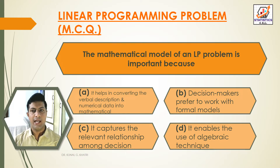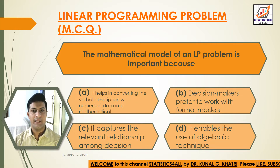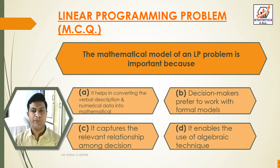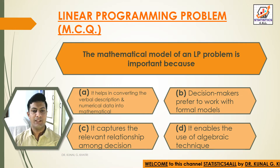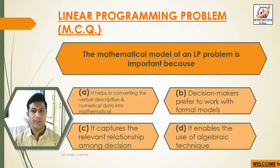Question 3: The mathematical model of an LP problem is important because — Option A: It helps in converting the verbal description and numerical data into mathematical form. Option B: Decision makers prefer to work with formal models. Option C: It captures the relevant relationship among decisions. Option D: It enables the use of algebraic technique. Answer: Option A — It helps in converting the verbal description and numerical data into mathematical form.